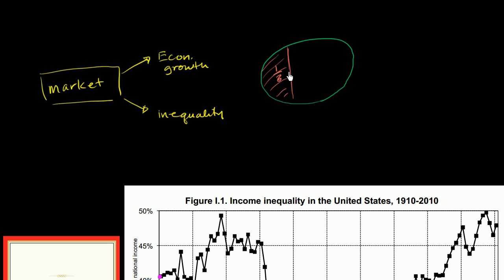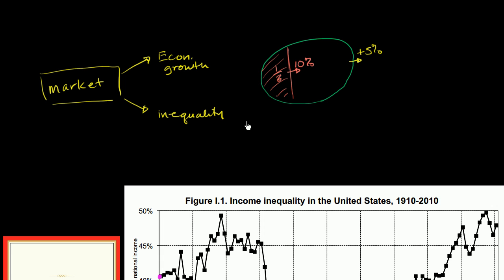For example, if the top decile's income grew by 10% while the overall economy grew by 5%, over time that orange section is going to take a larger and larger chunk of the green section. Now, as we saw in previous videos, even if this does happen — and this is by definition rising inequality — there could be a scenario where the other 90% are still getting a bigger pie and on a per capita basis could still be better off. But the focus of this video is not that.